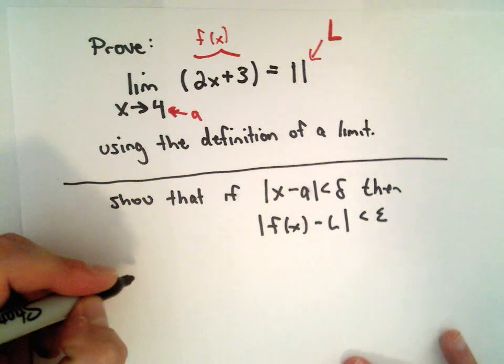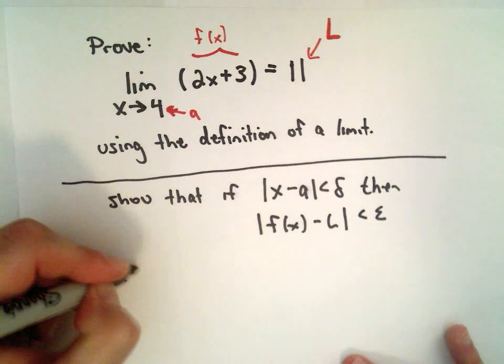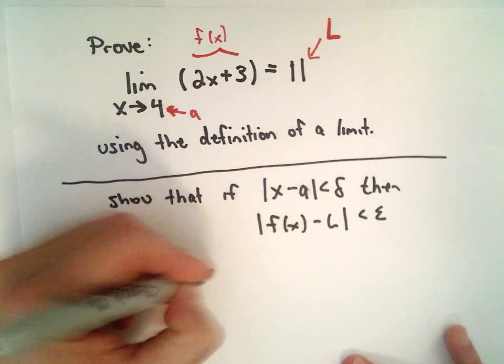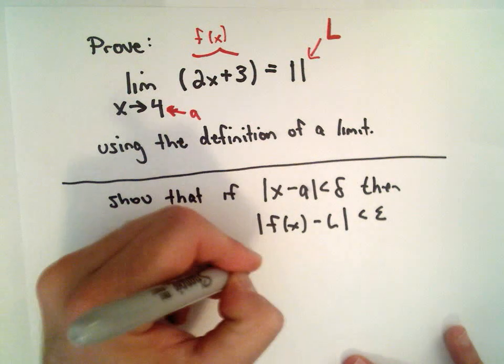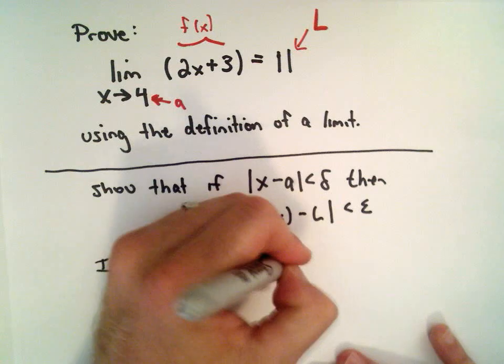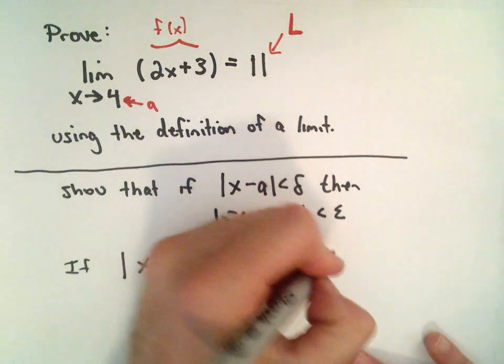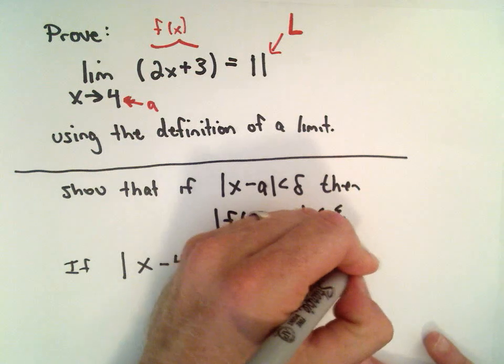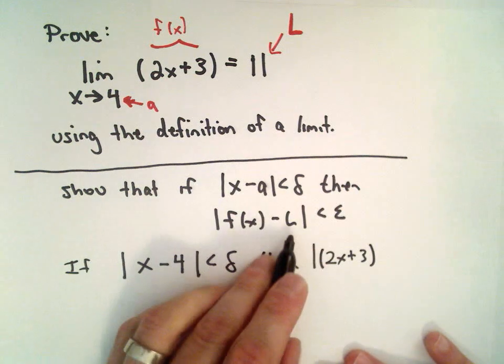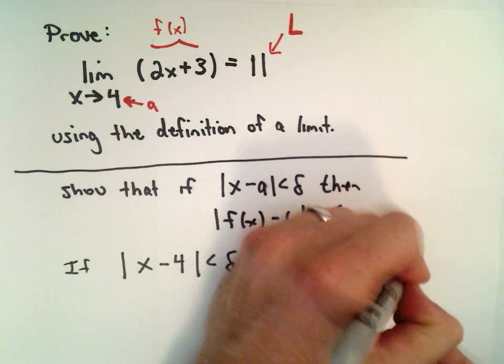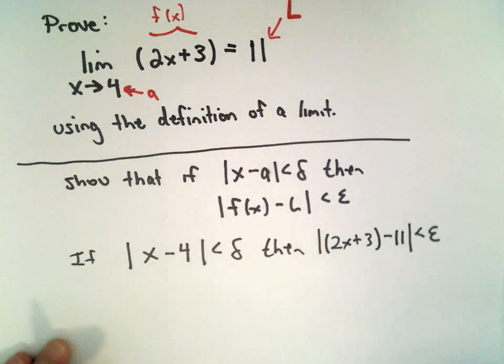So again, we have to show in this specific example that if the absolute value of x minus a, which is 4, if that's less than delta, then we have that f of x which is 2x plus 3, minus L which is going to be 11, we have to show that that's going to in fact be less than epsilon.